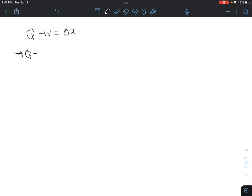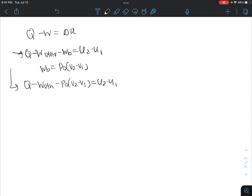So we get Q minus work other minus WB is equal to U2 minus U1. Since we have a constant pressure process, WB is equal to P0 times V2 minus V1. So this expression changes to Q minus work other minus P0 times V2 minus V1 equals U2 minus U1. But P0 is equal to P2 which is equal to P1.